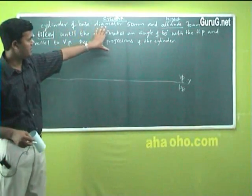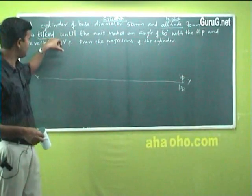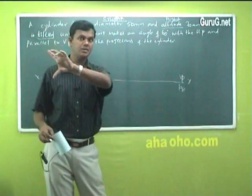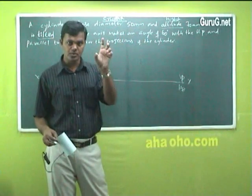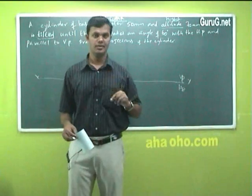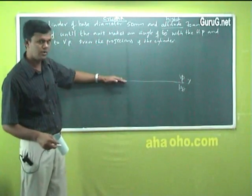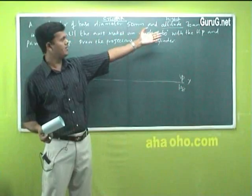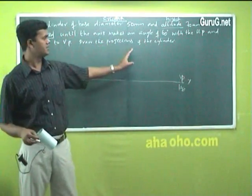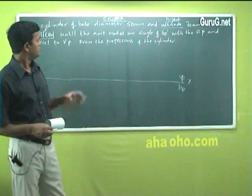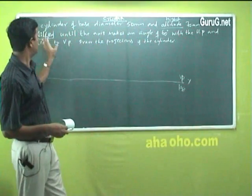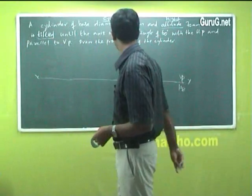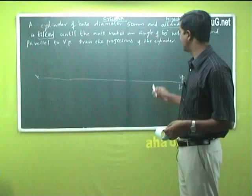The question reads, diameter of the 50 mm cylinder, altitude 70 mm, is tilted until the axis makes an angle of 60 degree with HP. The difference between this problem and previous problem, say maybe prism or pyramid, is there we had a clue that it is resting on HP or VP. So you should come to the conclusion, it means fixing on x, y line. Here, it is not given any type of that word. But it just shows, makes an angle of 60 degree with HP and parallel to VP.